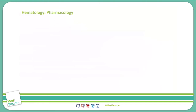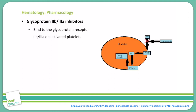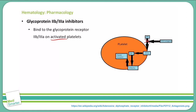Let's discuss our glycoprotein 2B3A inhibitors. Like our previous ADP receptor blockers, glycoprotein 2B3A inhibitors are going to inhibit platelet aggregation. They do this, however, by binding to the actual receptor that's on activated platelets. Our ADP blockers keep this glycoprotein from even being expressed on platelets so they're not even activated, whereas this medication will block the receptor on platelets that have already been activated, therefore preventing platelet aggregation.